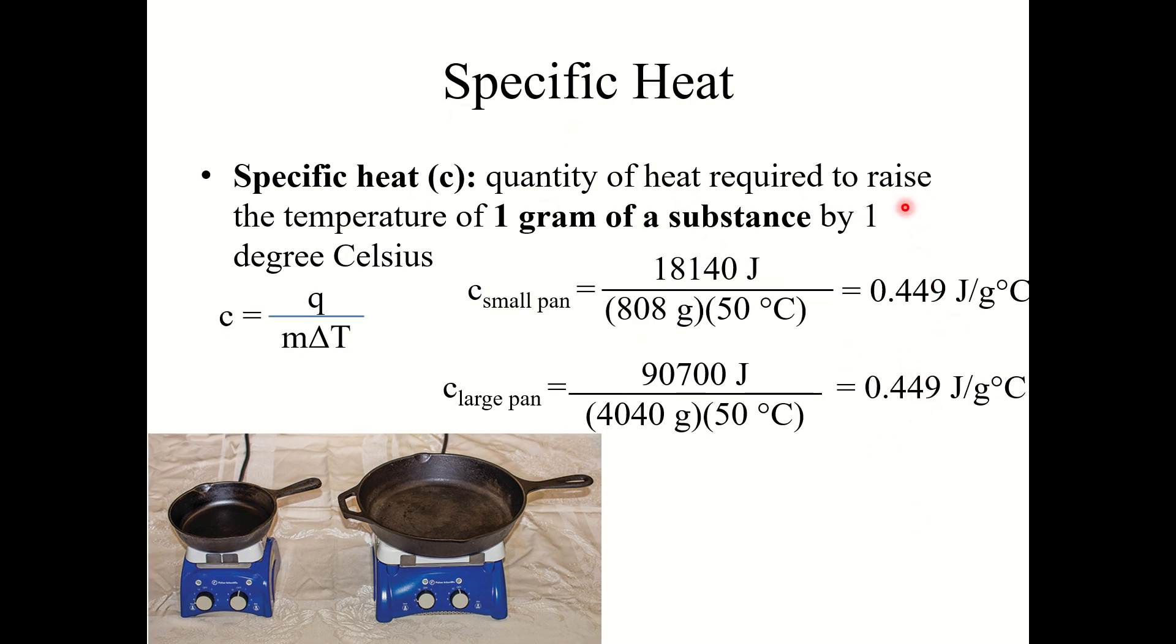Because specific heat is quantity of heat required to raise the temperature of one gram of a substance. So since both of these pans, let's say they're made with, let's say these are cast iron pans. Since they are both made with iron, they have the exact same specific heat. It takes the same amount of energy to raise one gram of the substance one degree Celsius.